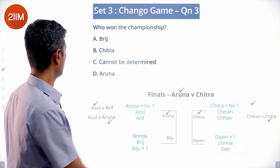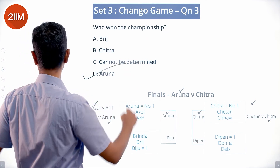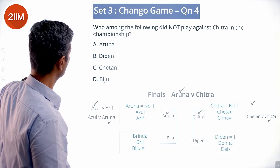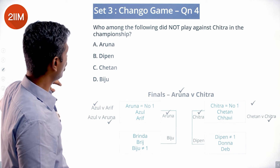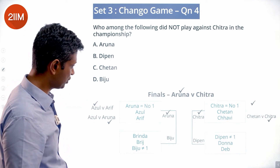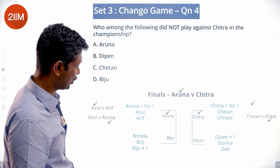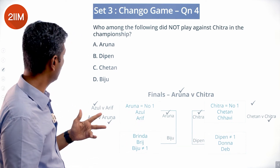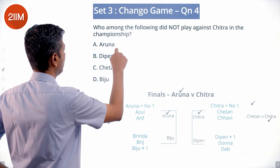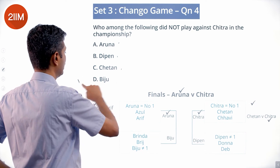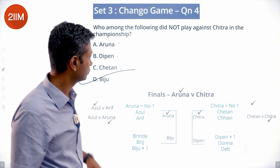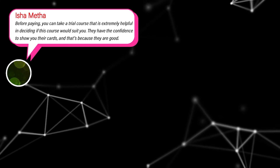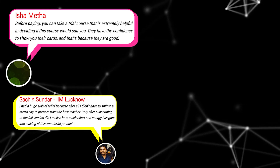Aruna won the championship. For the question 'who did not play against Chitra?' — Chitra played Chetan, Dipen, and Aruna. She did not play against Biju. So Biju is the answer.